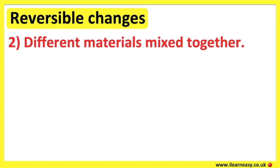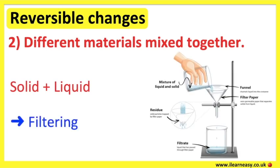There are four processes for separating mixtures. When a solid is mixed with a liquid, the process can be reversed by filtering. This process consists of moving a mixture through a filter, usually a paper filter containing small holes. When the mixture is poured through the filter, the liquid passes through and the solid does not. Therefore, we can separate out the solid and the liquid.